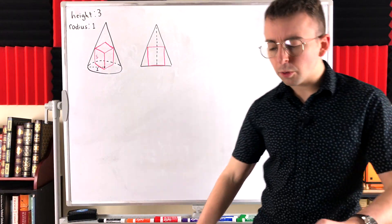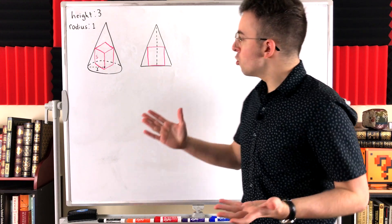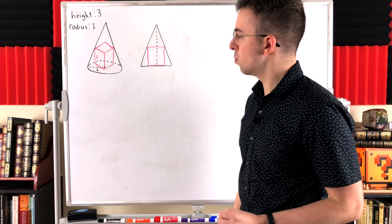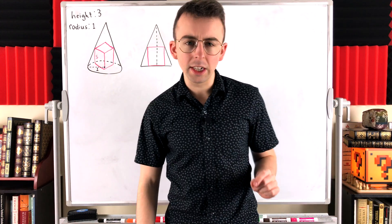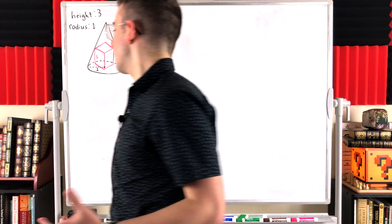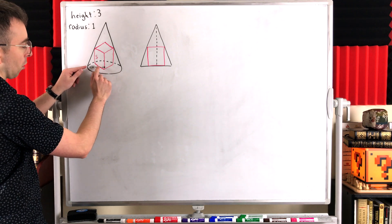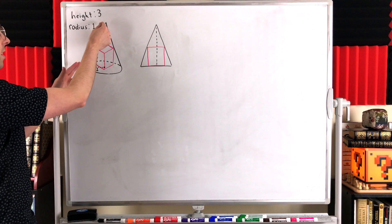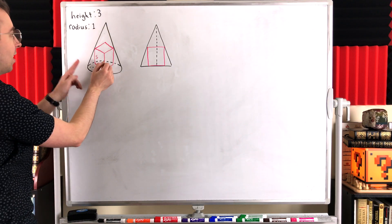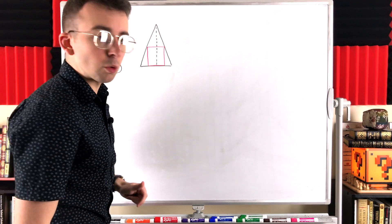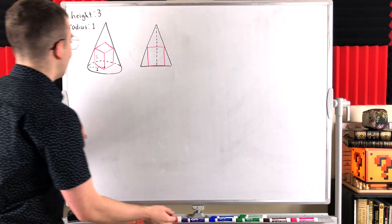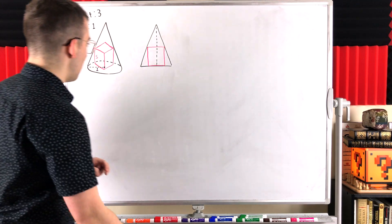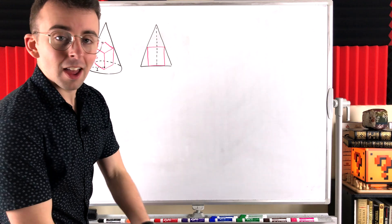To find S, it would seem useful if we could distill all of our focus into a 2D slice — a 2D cross section of this cone and cube — because we're very comfortable with working in two dimensions. We would want the cross section to contain all of the important pieces and information: a diameter of the circular base, one of the side lengths of the cube, and the axis of the cone going from the vertex to the center of the base, whose length is the height. Consider the plane that contains these two opposite points of the cube as well as the center of the circular base of the cone — that plane slices right through the middle of the cone and the cube.